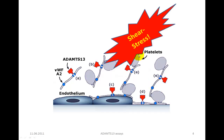It is important to note that this happens in particular under conditions of shear stress, when von Willebrand factor undergoes certain conformational changes and the binding domains for platelets, endothelium and collagen are exposed — which at the same time also exposes the A2 domain, making it accessible to cleavage by ADAMTS-13.